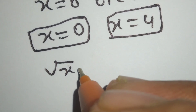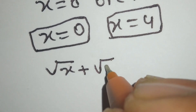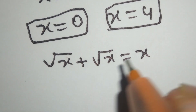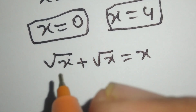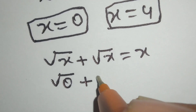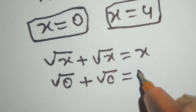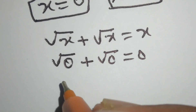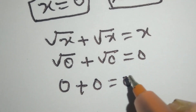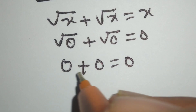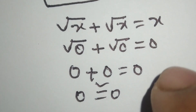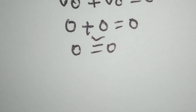We will put the value x equal to 0 into the equation. Square root of 0 plus square root of 0 is equal to 0. Square root of 0 is 0, so 0 plus 0 equals 0, which equals 0. This is correct, so x equal to 0 is a valid answer.